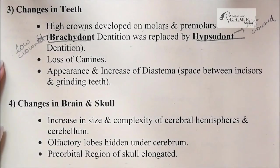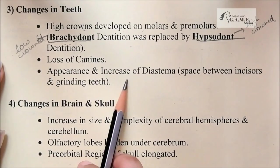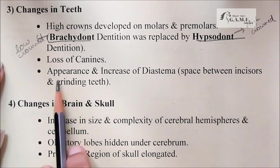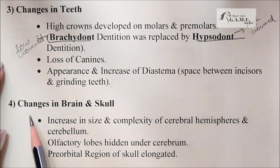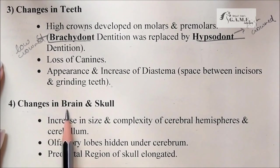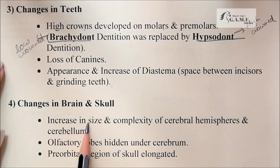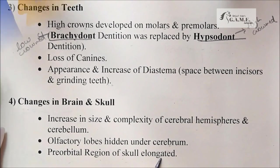Further changes in teeth include loss of canines and the appearance and increase of the diastema — the space between the incisors and grinding teeth. Next, changes in the brain and skull: increase in size and complexity of the cerebral hemispheres and cerebellum, olfactory lobes hidden under the cerebrum, and the pre-orbital region of the skull elongated.